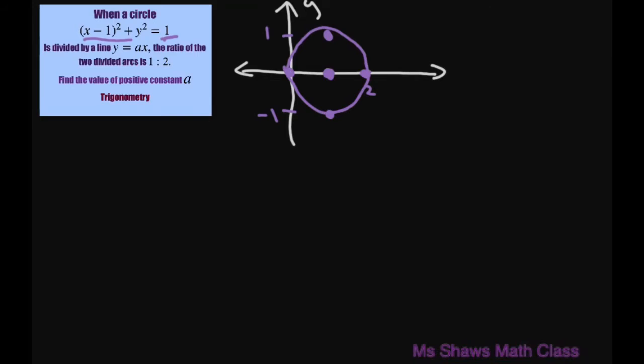Now we have this line y = ax, so the y-intercept is 0. The arc ratio is 1 to 2, so when you draw this, it's going to be one-third up here and two-thirds down here.